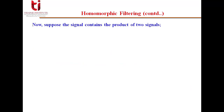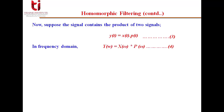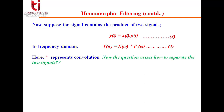Now suppose the signal contains the product of two signals — instead of addition, we have multiplication: y(t) = x(t)·p(t). In the frequency domain, multiplication becomes convolution, so Y(ω) = X(ω) * P(ω), where the star operator represents convolution. The question is how to separate these two signals, because convolution is not a linear operation.